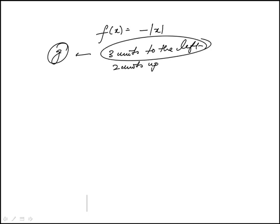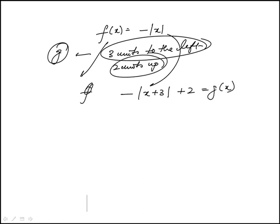So three units to the left would make, I should write the intermediate, would be x plus three, and then two units up would add two. So this would be g of x.